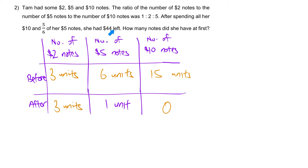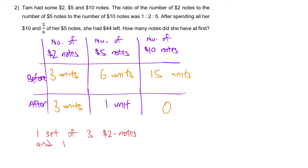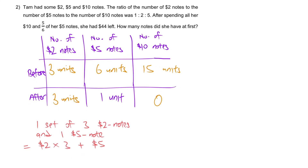At the end, she had $44 left. The after-state ratio is 3 units of $2 notes to 1 unit of $5 notes. For every 3 $2-notes and 1 $5-note, we can form 1 set. One set of 3 $2-notes plus 1 $5-note equals $6 plus $5, which gives us $11 per group.